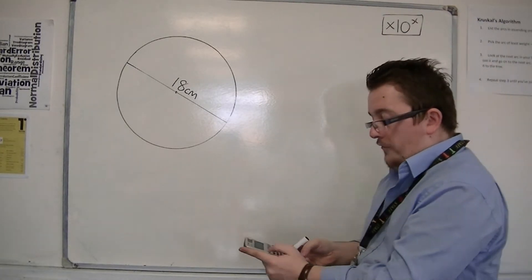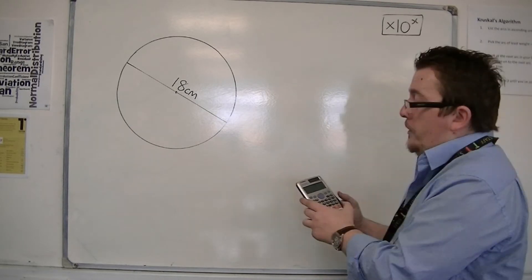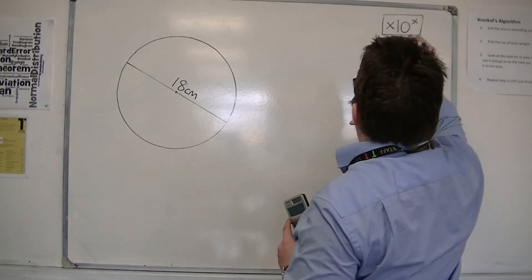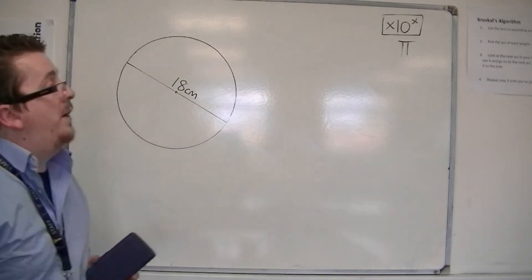If you do shift, and then that button, a little pi symbol should come up, and the pi symbol looks like this. That's pi.